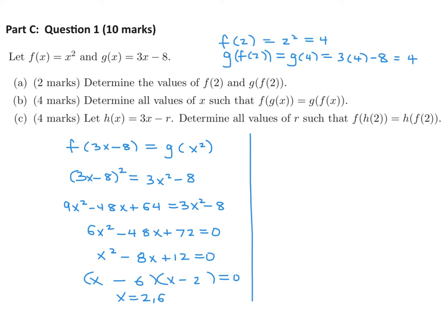Let h(x) be 3x minus r. Determine all values of r such that f(h(2)) equals h(f(2)). So f(h(2)): h(2) using that formula would be 3 times 2 minus r, giving 6 minus r. Then we substitute that into f, so that's (6 minus r) all squared. And h(f(2)): f(2) is 2 squared equals 4, so h(4) would be 3 times 4 minus r using that formula.